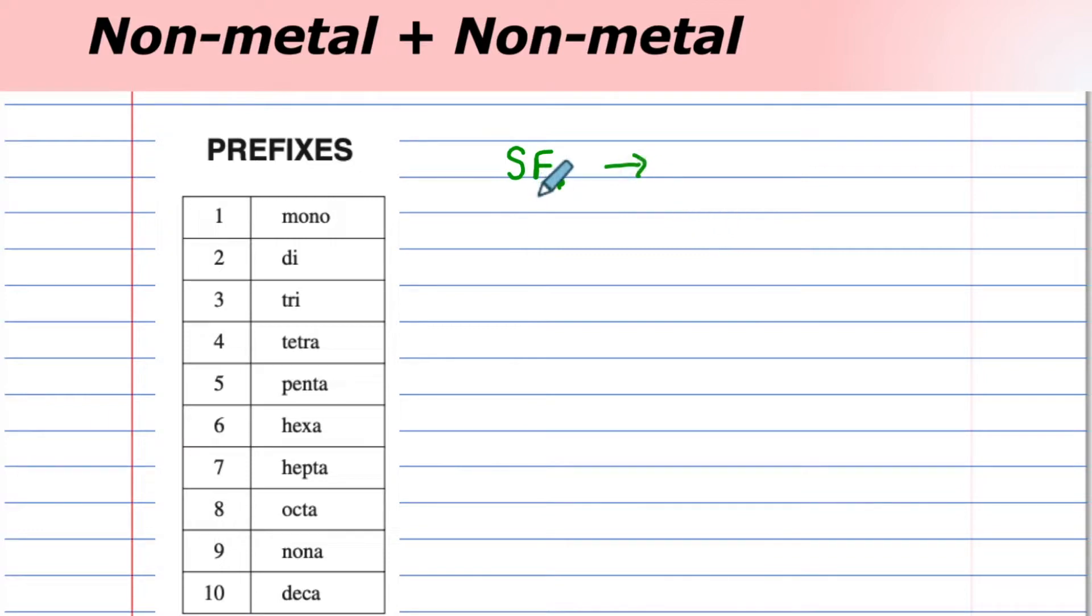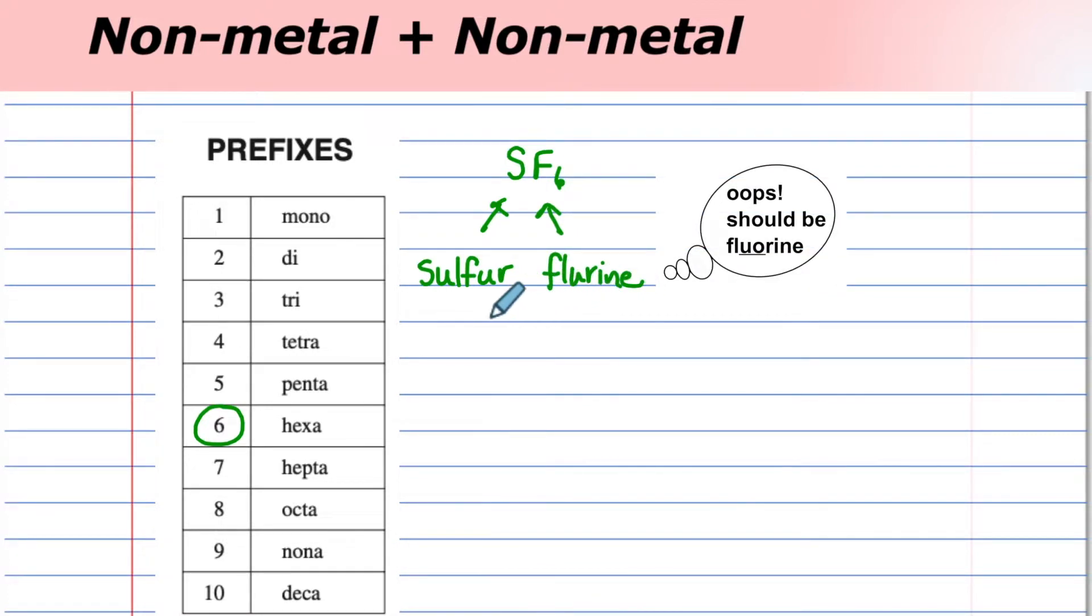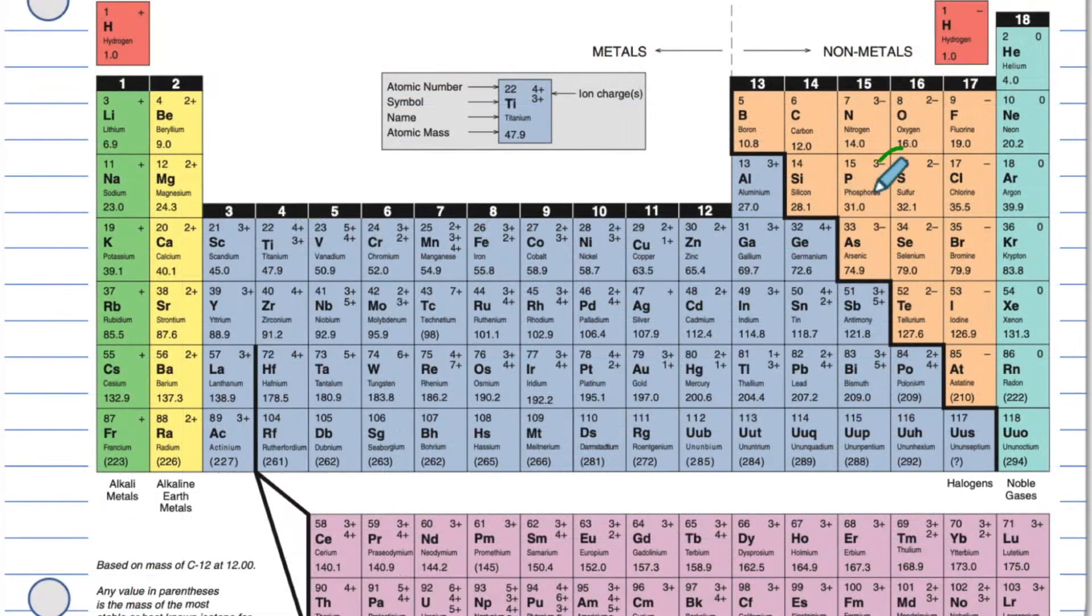SF6. When we have an invisible one here, we don't need to start with the prefix mono. First, we have to know that we are building a compound using sulfur and fluorine. Both are non-metals.